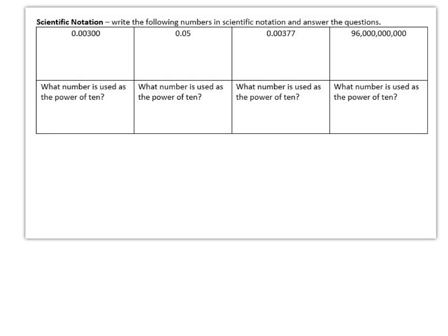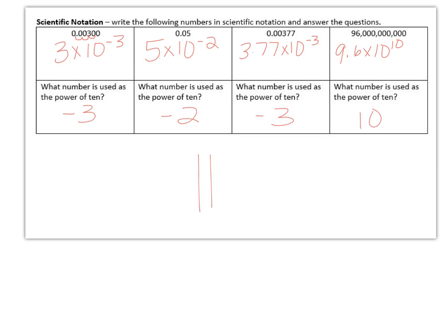On the next one, we're working on scientific notation. This was all the way from the beginning of the year. And all you had to do was count the decimal movement. And so this went one, two, three places. So this would have been three times ten to the negative three. Next one would have been five times ten to the negative two. Next one is 3.77 times ten to the negative three, because again, it moved three places to the left. And then the last one would be nine point six times ten to the tenth, because the decimal had to move ten places to the right. And so the number used as the power of ten would be negative three, negative two, negative three, and ten. If these were on a bubble sheet, these would be in the ones place.